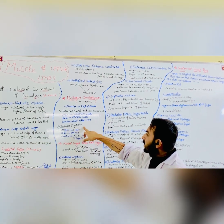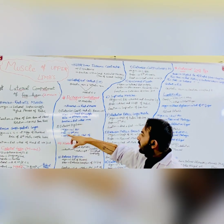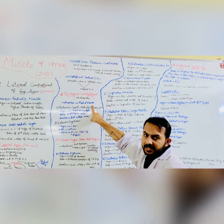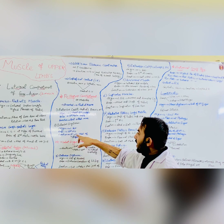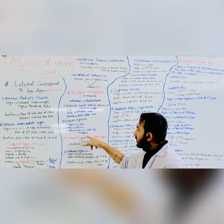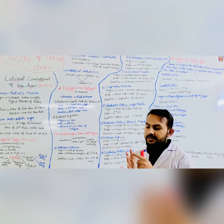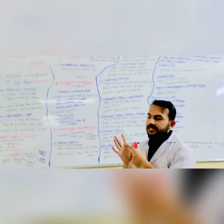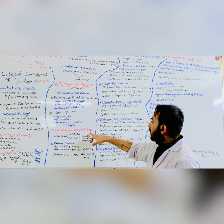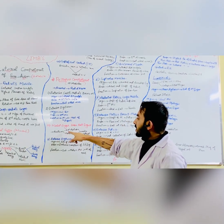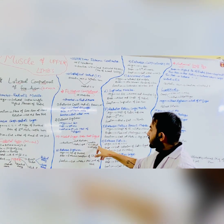The second muscle is the extensor digitorum. Its origin is the lateral epicondyle. Its insertion is the middle and distal phalanges of the four fingers via dorsal digital expansions. Metacarpal, ball, and middle finger joints are all involved in extension. The intertendinous connections mean the fingers cannot extend completely independently.